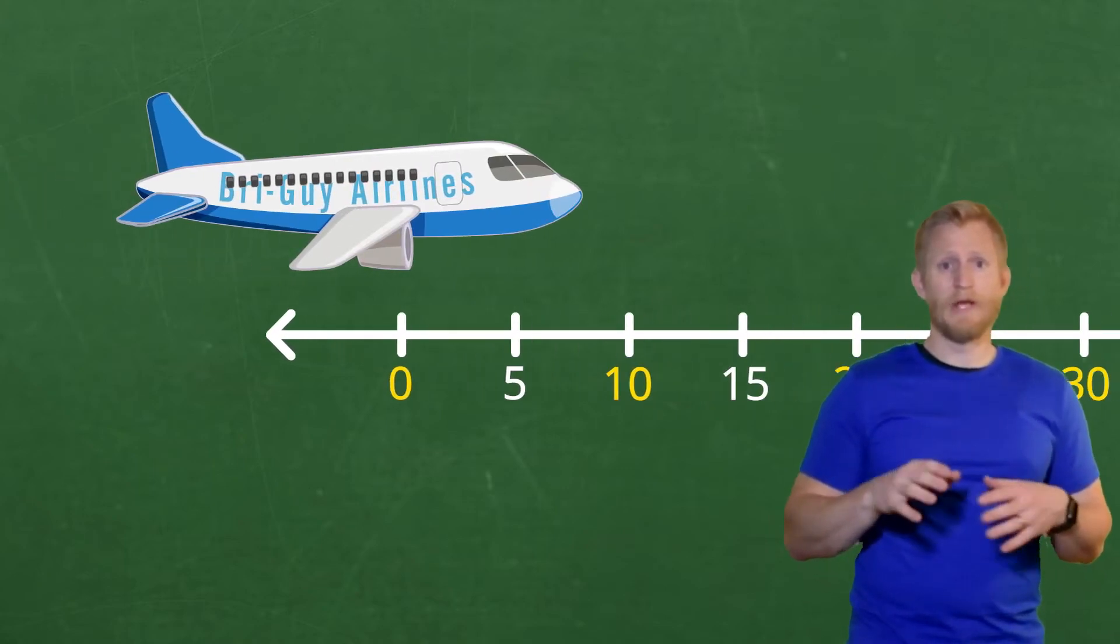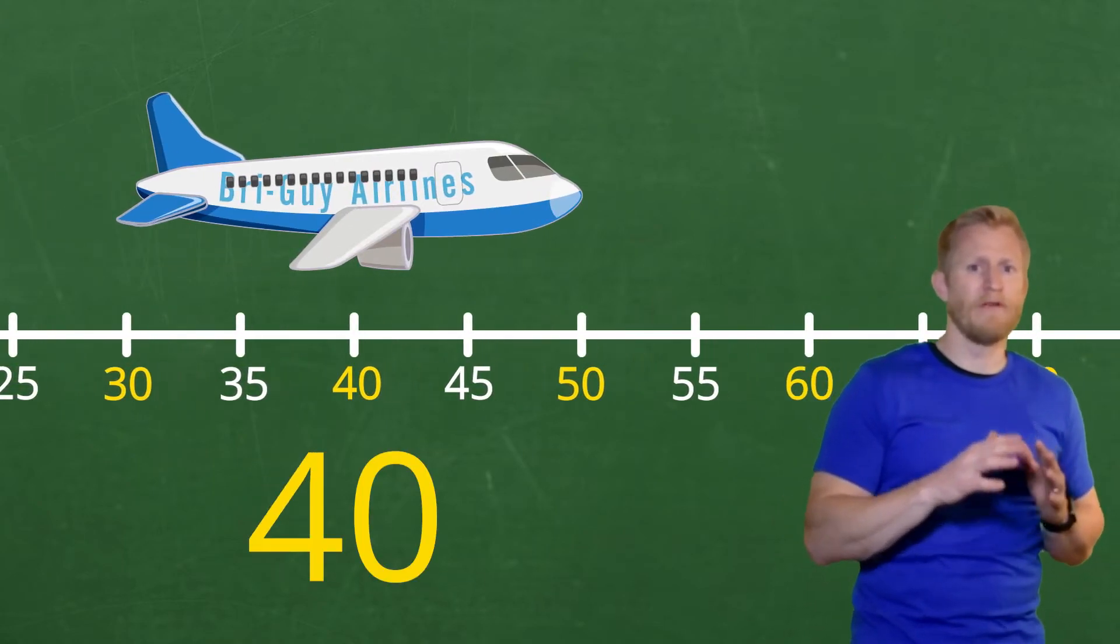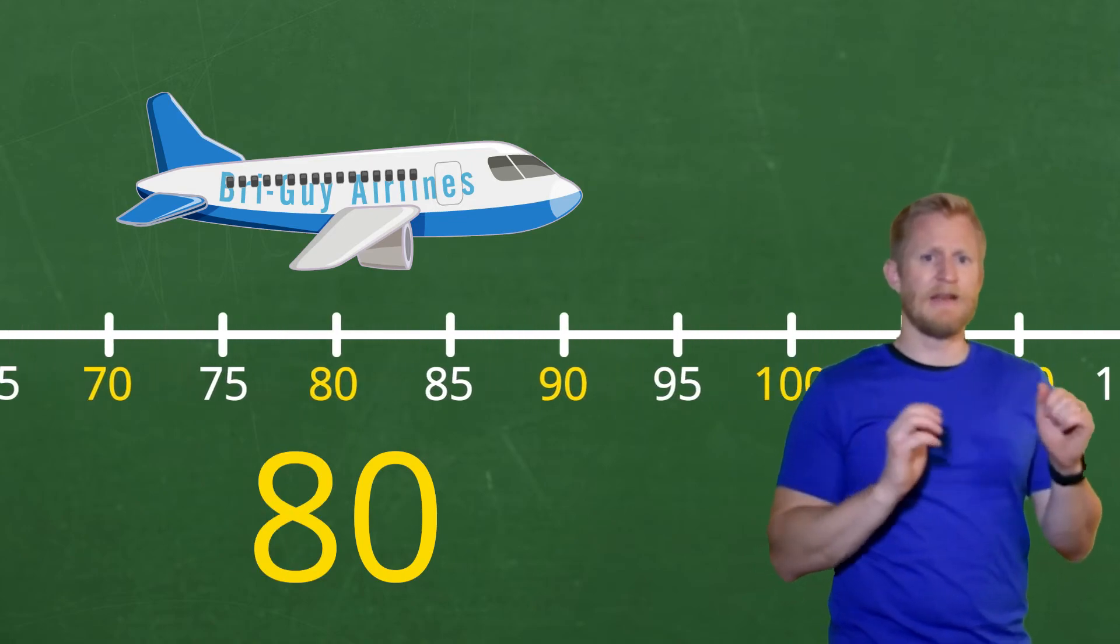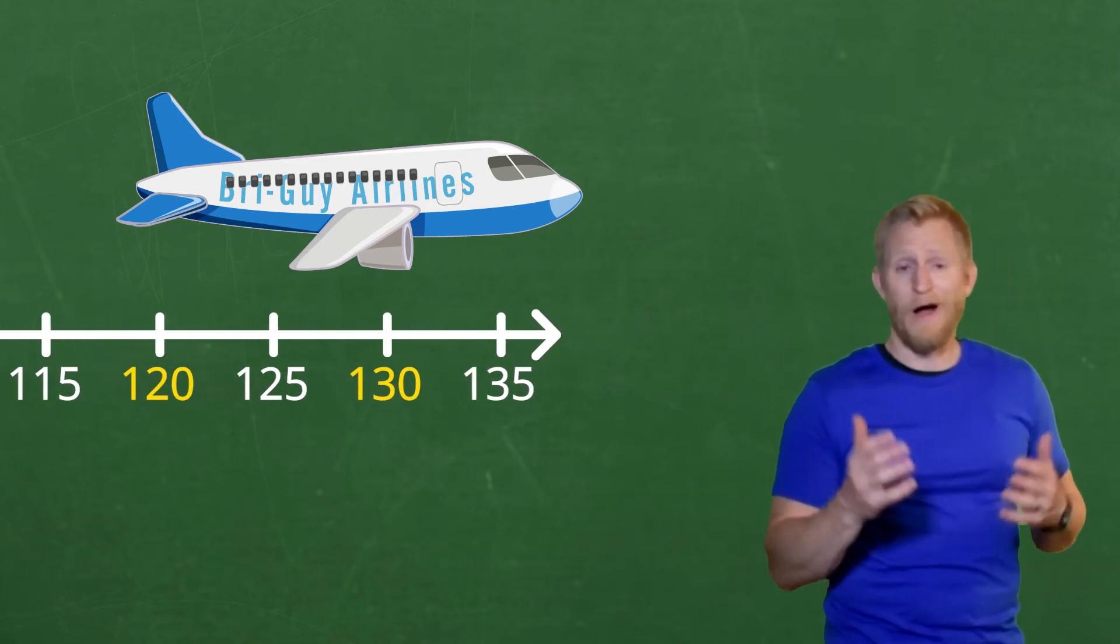Starting back at zero, we count 10, 20, 30, 40, 50, 60, 70, 80, 90, 100. Wow, that was fast.